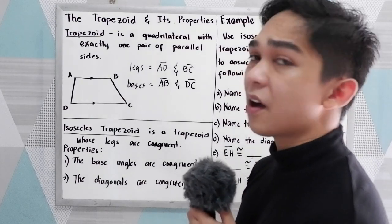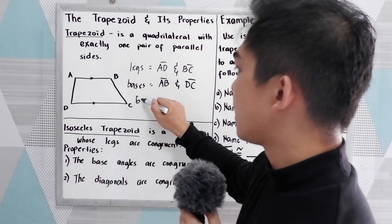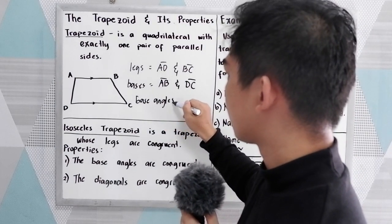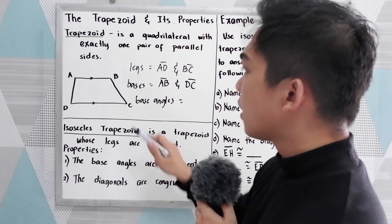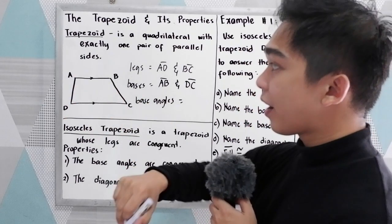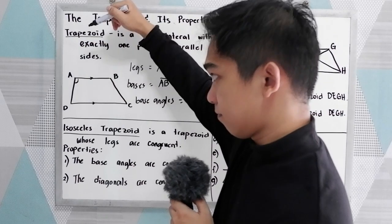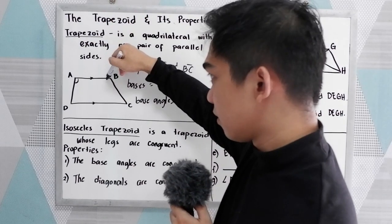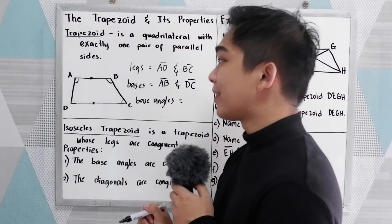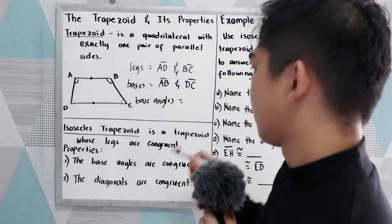We also have the base angles. Notice that in our trapezoid, we have four angles — and those are what we call the base angles.